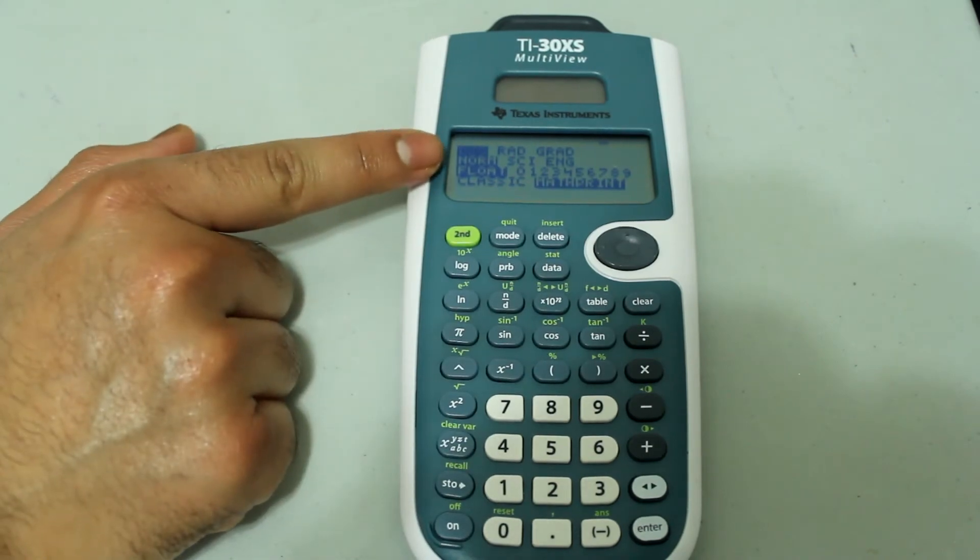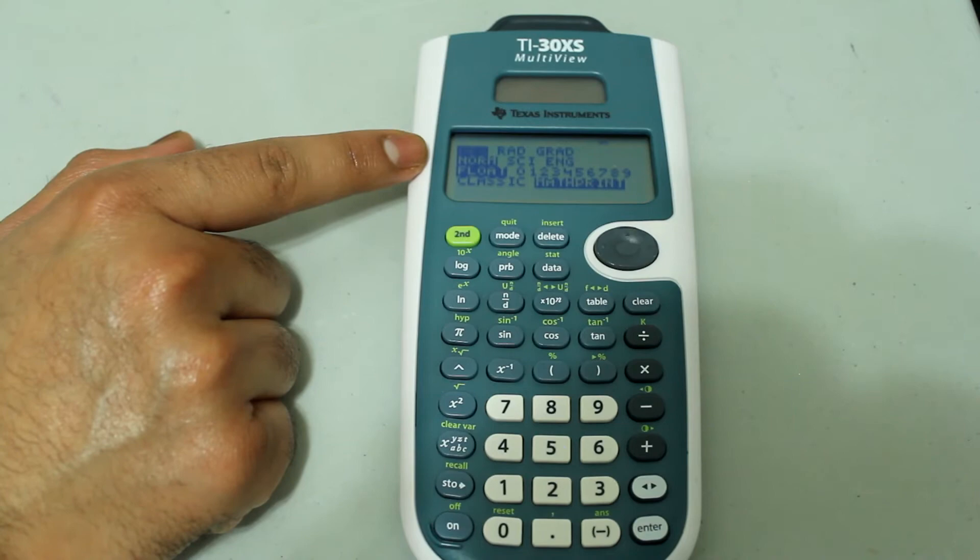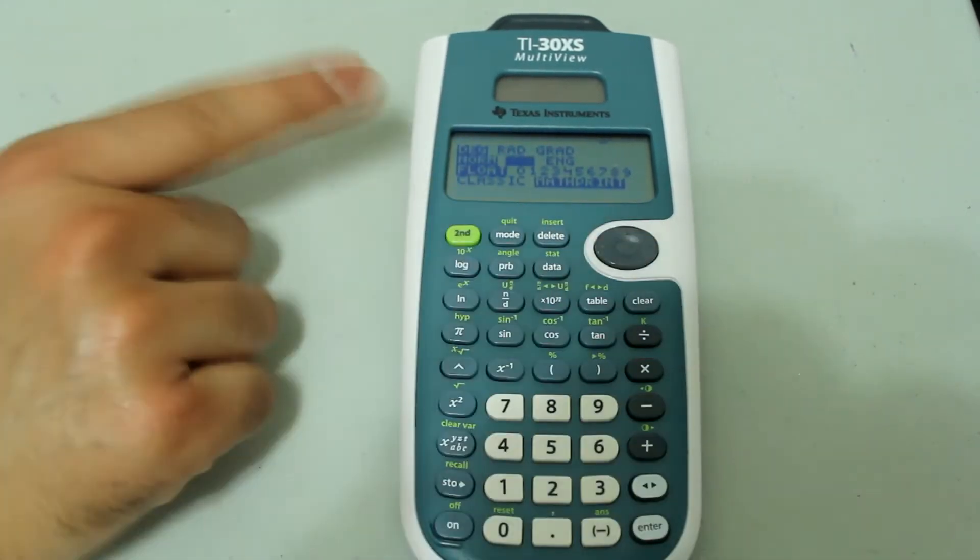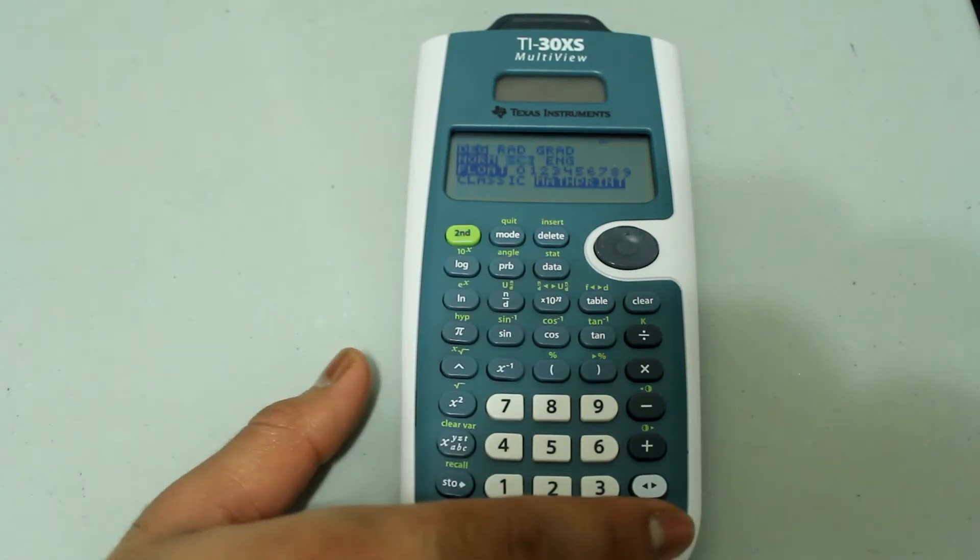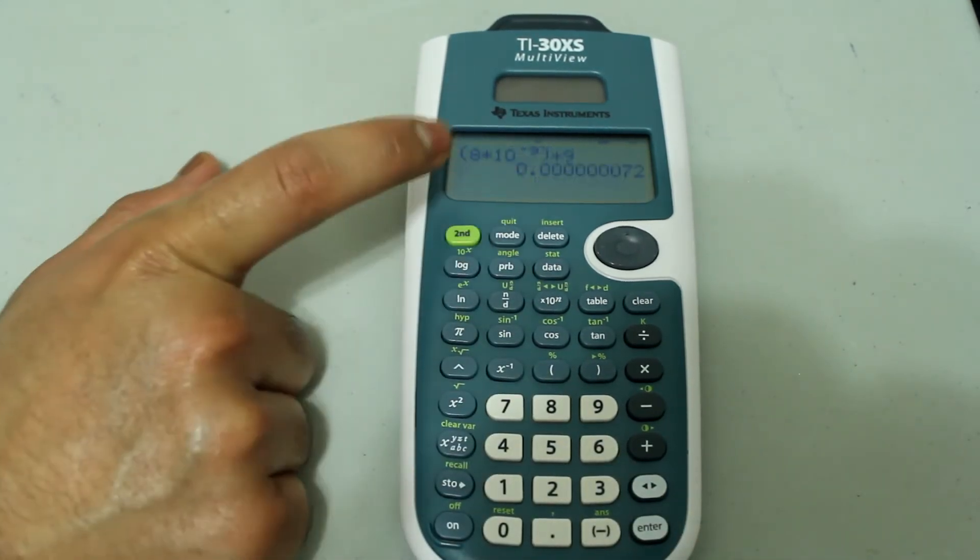And the second line, the first option is norm, which is the decimal option. And arrow down and arrow over to scientific notation and press enter. And then press second mode to quit.